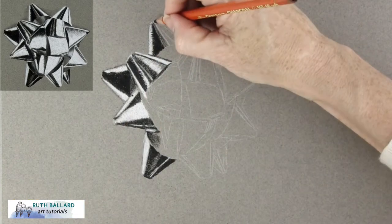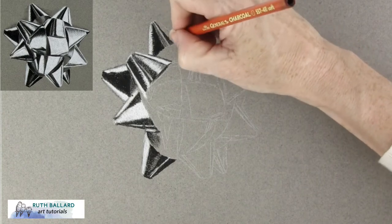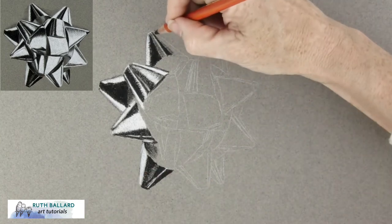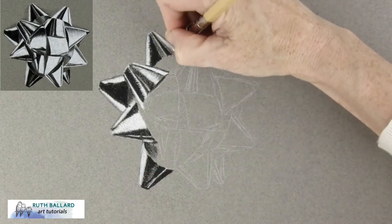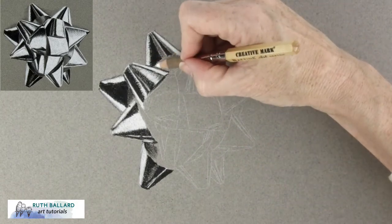You can really create subtlety with charcoal and I'm not blending at this stage. The inside of the cone shape is more subtle with less contrast and I've also used much lighter pressure.